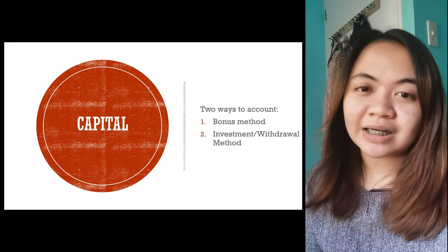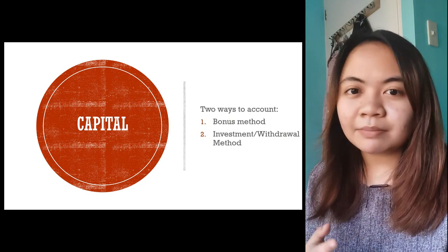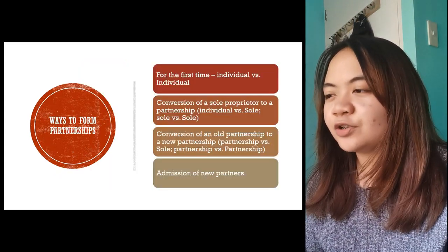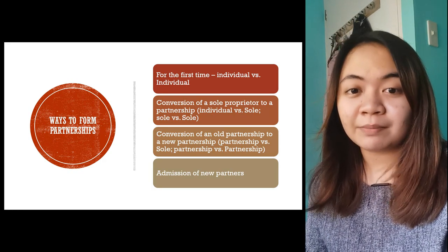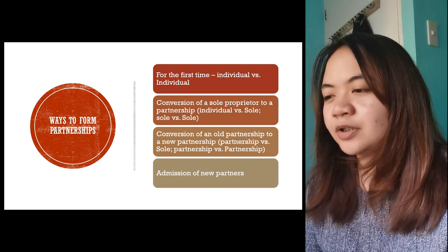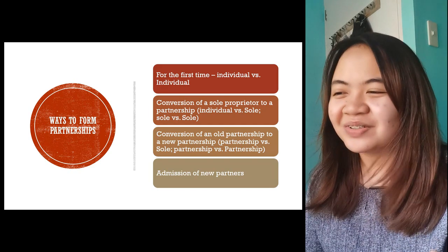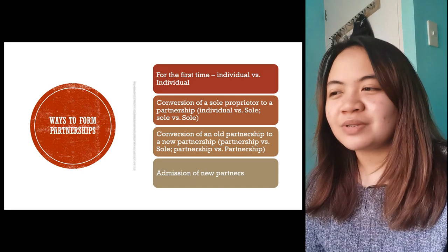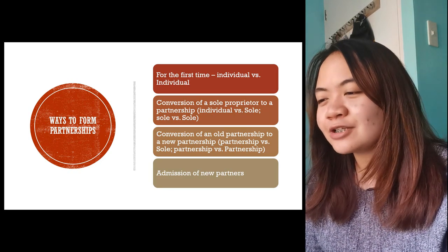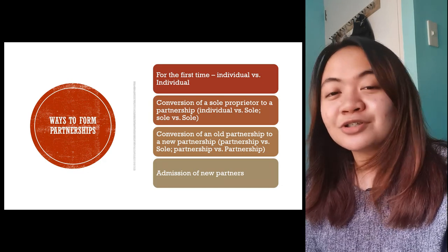There are two ways to account for capital: the bonus method and the investment or withdrawal method. These will be discussed when we face problems so the difference becomes clearer. Ways to form a partnership for the first time include: individual versus individual — two sole proprietors forming a partnership; conversion of a sole proprietor to a partnership — individual versus sole; sole versus sole. An individual usually has no existing business, while a sole proprietor already has one.